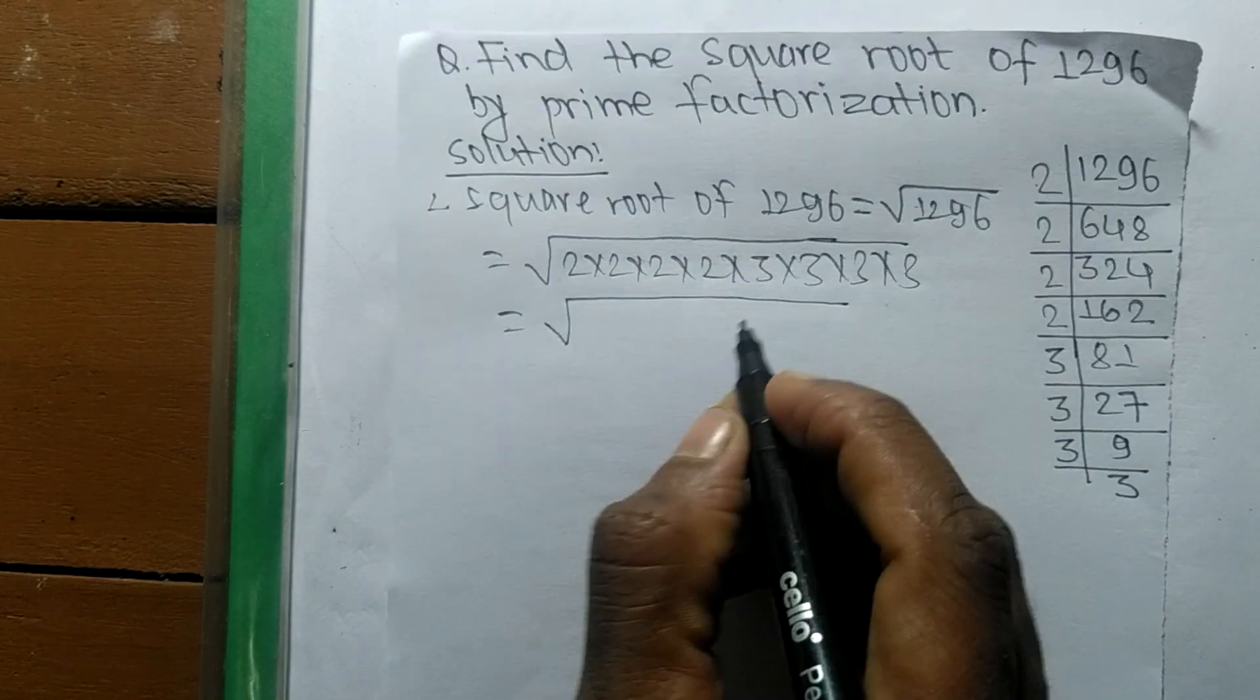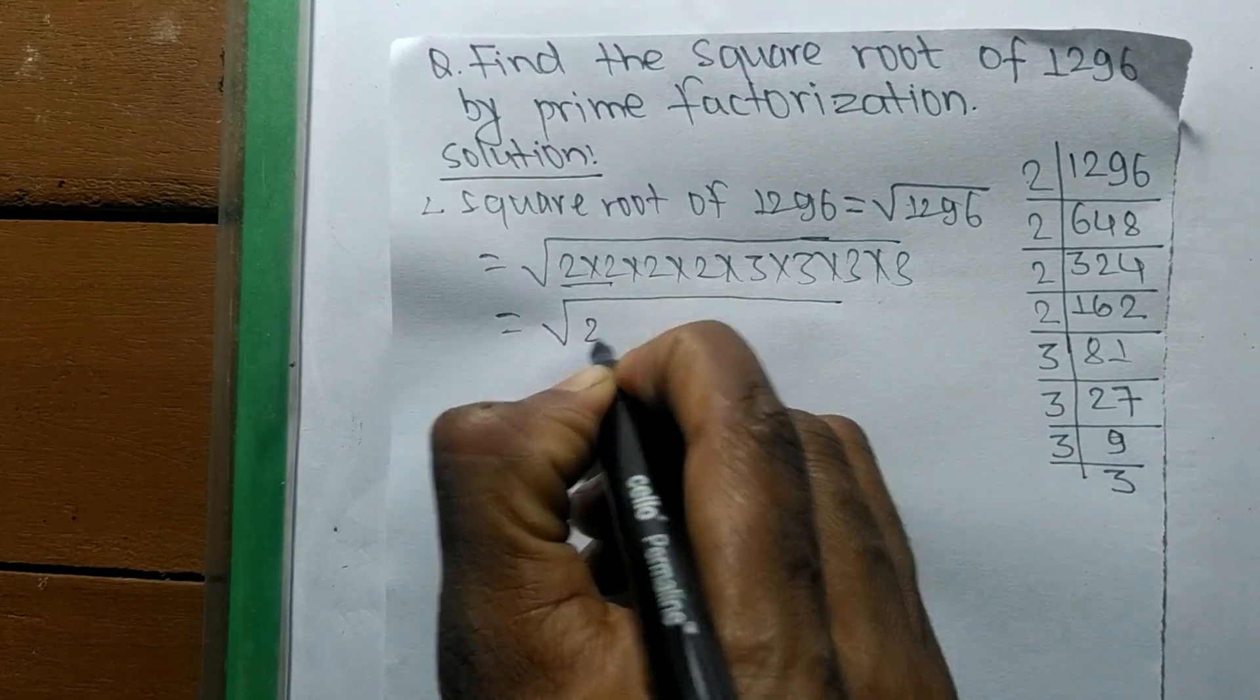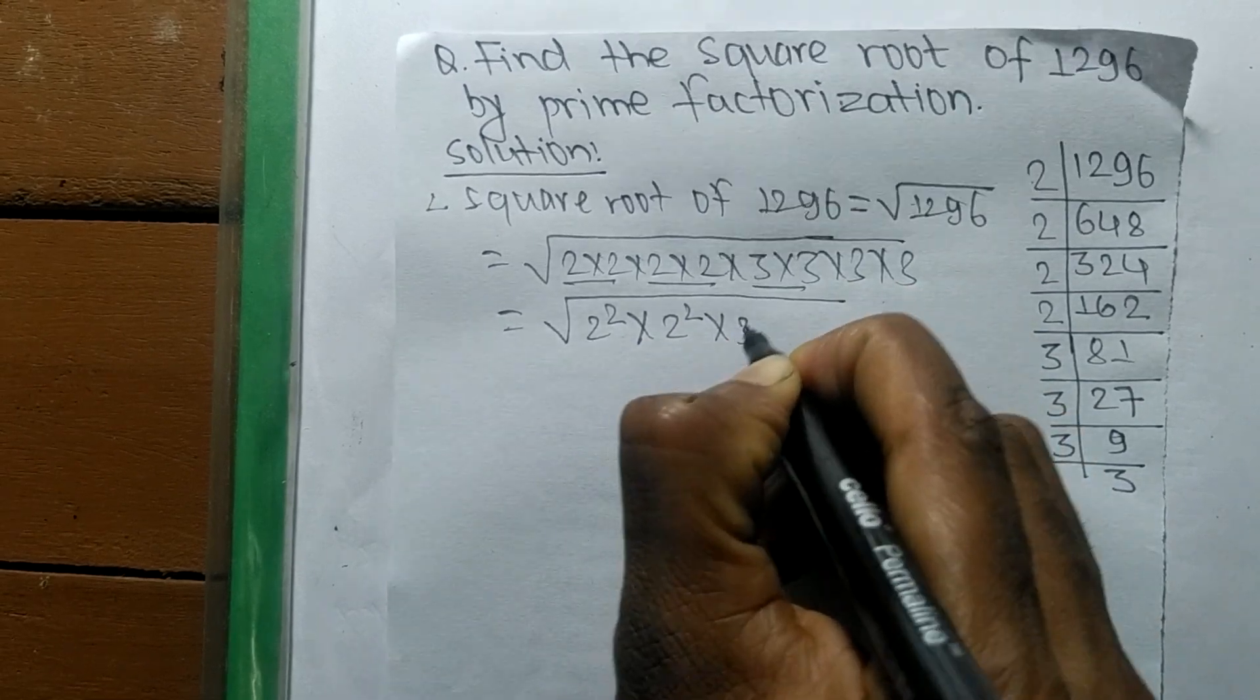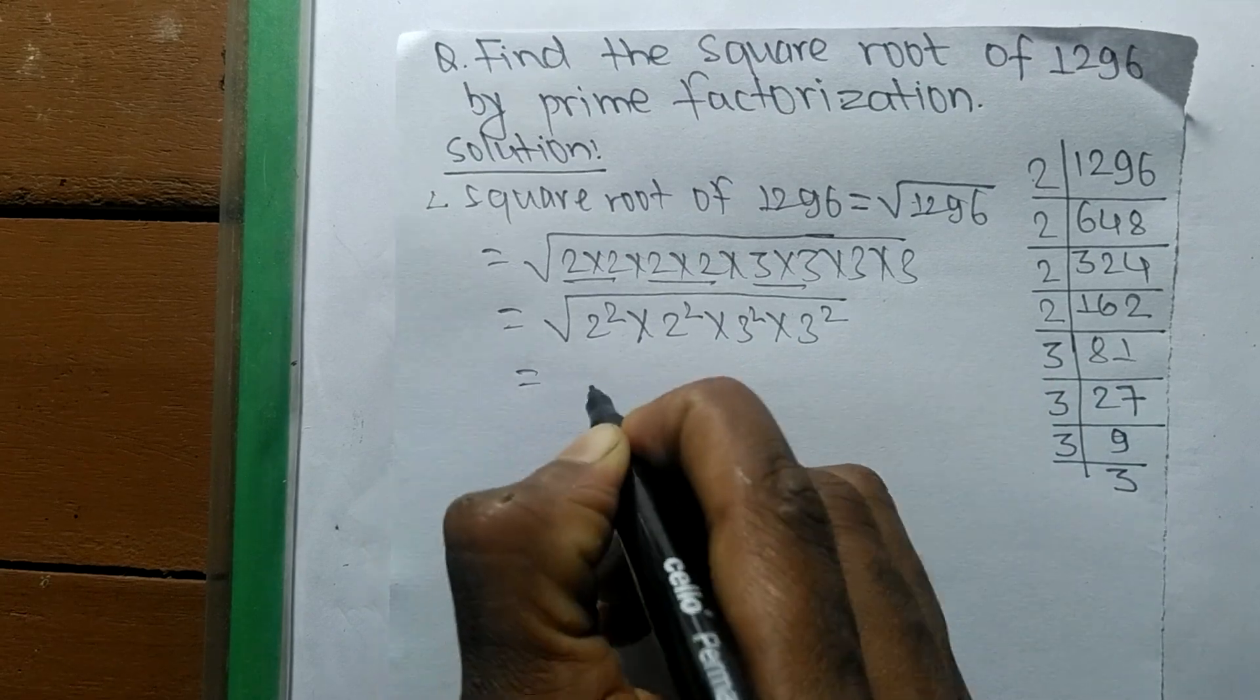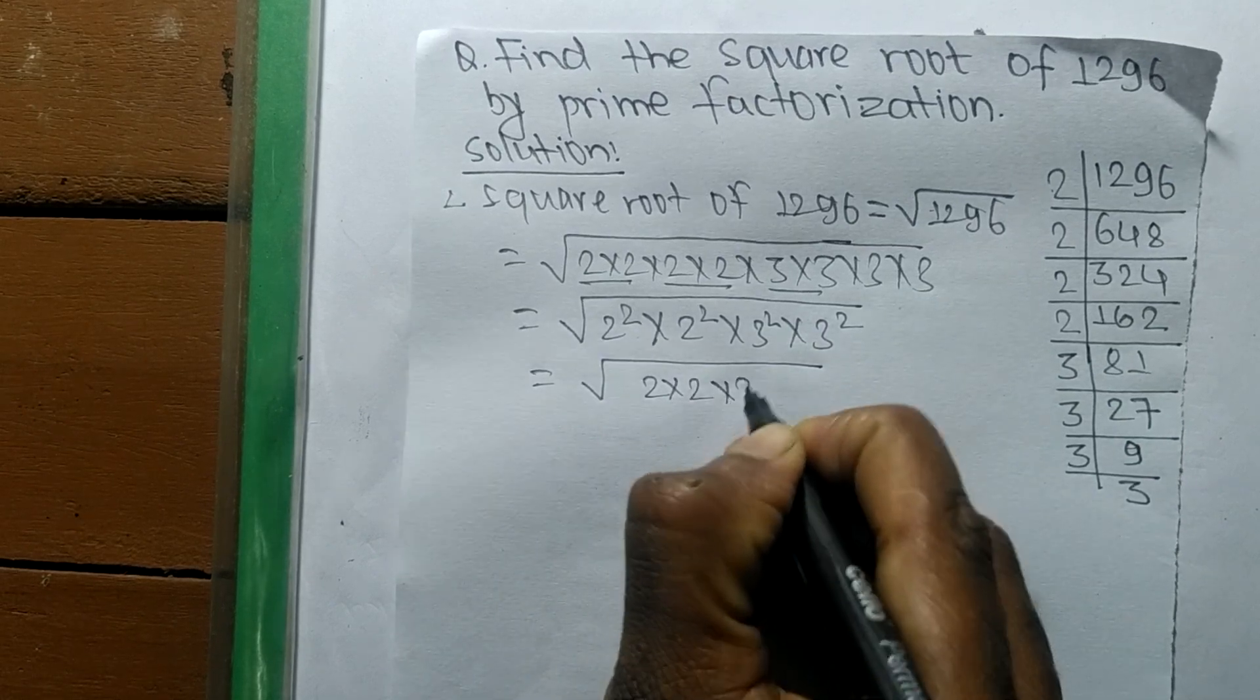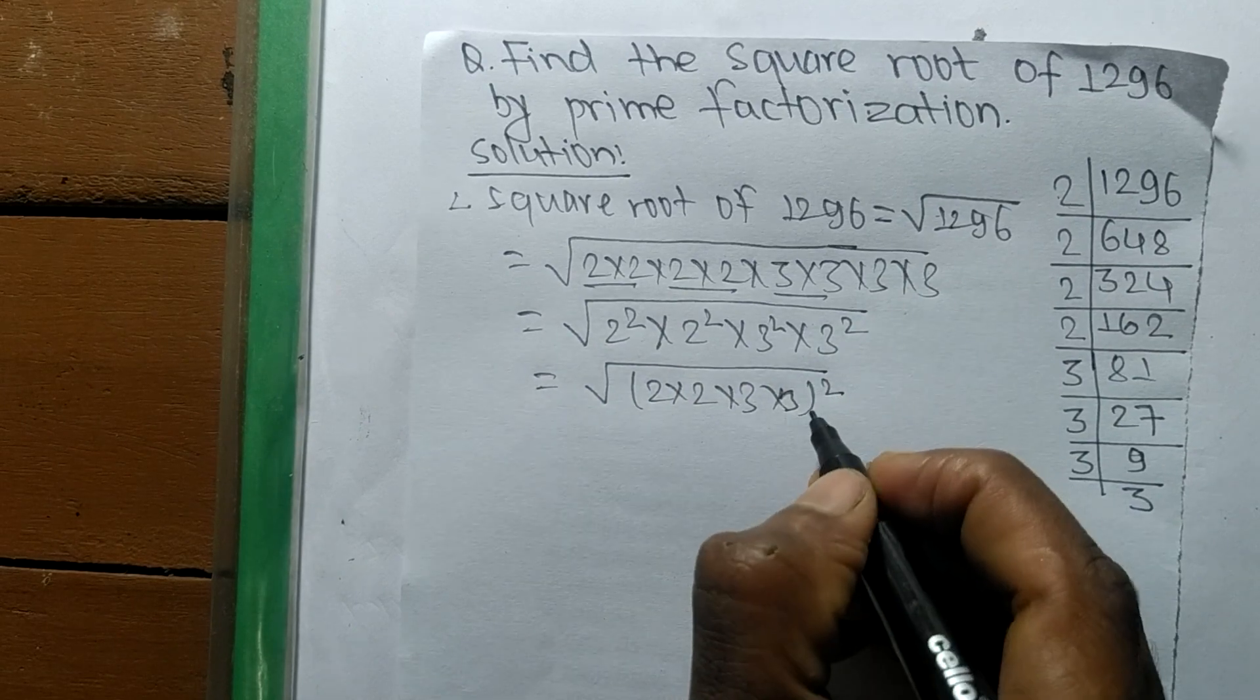So 2 into 2, it is 2 square. Again 2 into 2, 2 square. 2 times 2 is 2 square. 3 into 3 is 3 square. So we have the common squares from all these numbers.